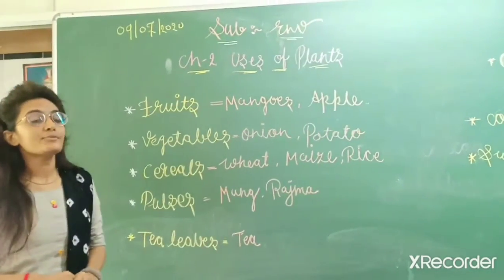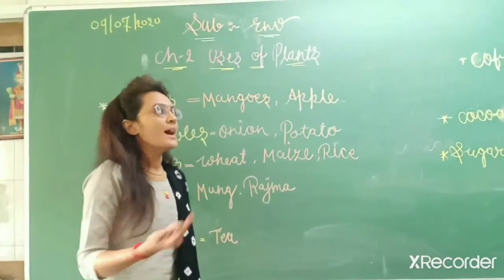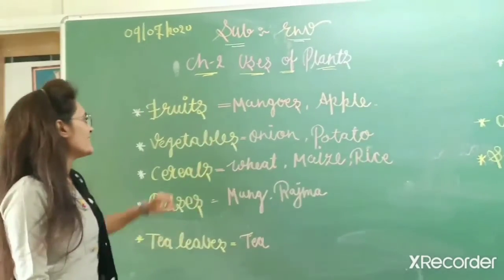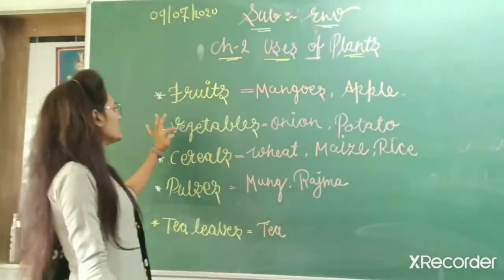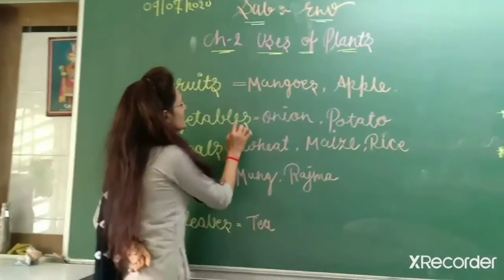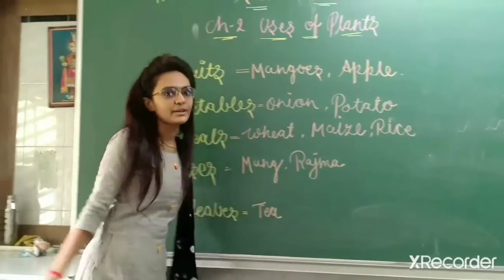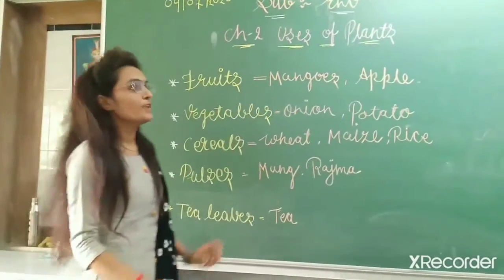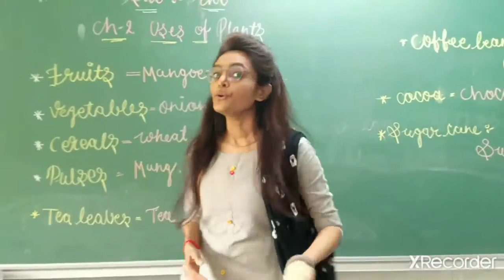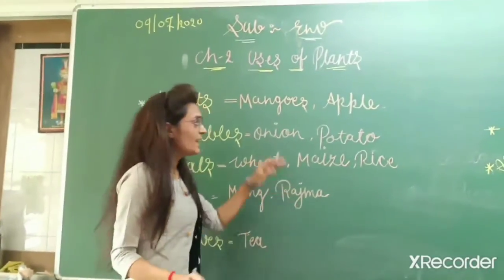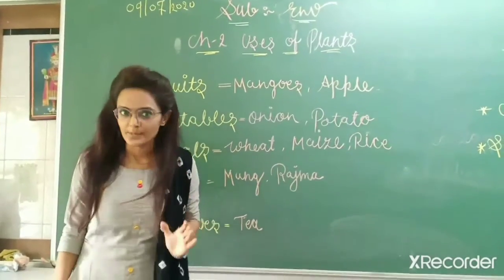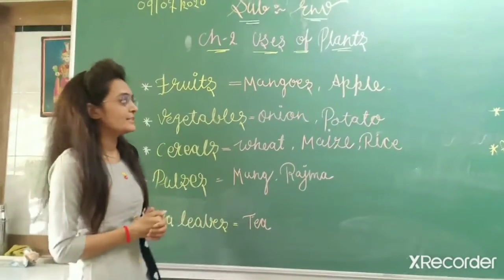Now which fruit is your favorite? Mangoes. Now second is vegetables. In vegetables we have onion, potato, cabbage, lettuce, ginger. These all are vegetables.